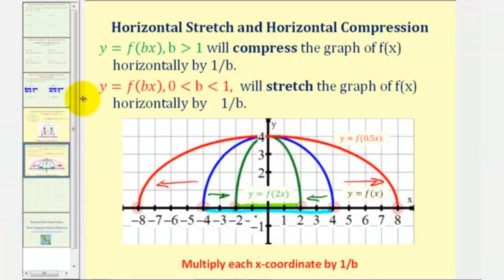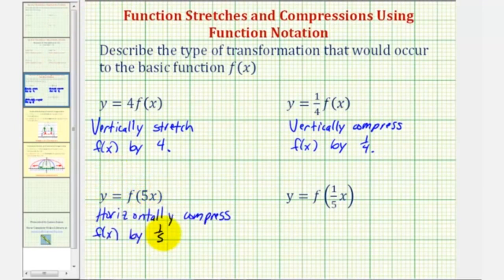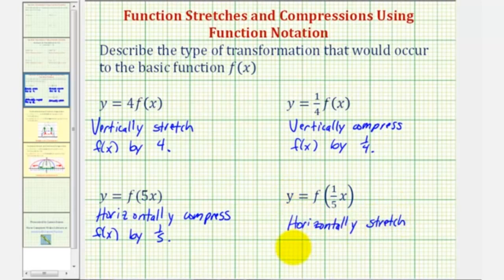So going back to our last two examples: for y equals f of five x, this will horizontally compress f of x by one fifth. And for y equals f of one fifth x, this would horizontally stretch f of x by five, which again is the reciprocal of b.